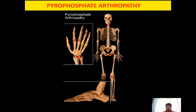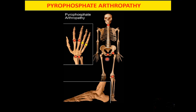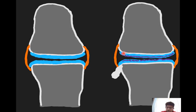The joints most commonly involved are the knee joint, which is the most common, followed by the radiocarpal joint in the wrist. In the hand, the second and third metacarpal heads are common sites of involvement. Other sites include the shoulder and hip joints. When the axial skeleton is involved, it is mainly the C1 and C2 vertebral bodies, where calcium pyrophosphate deposition can be seen around the dens.